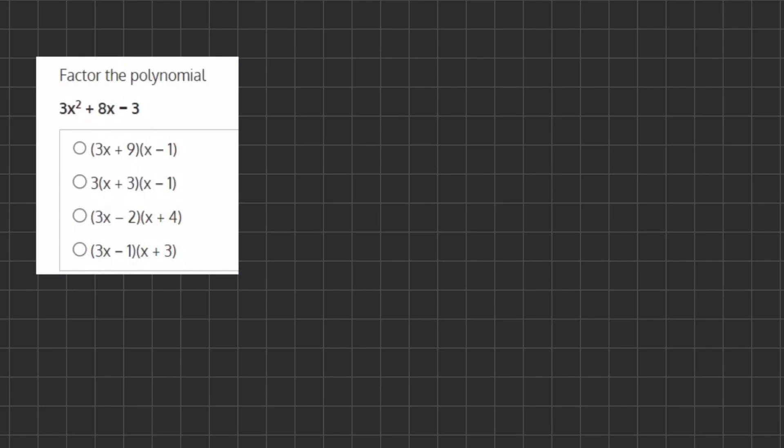In this problem we are going to factor this polynomial. Now this polynomial has a coefficient of 3, and when you have a coefficient that does not equal 1, we solve it in a different way. We are going to solve by factoring.